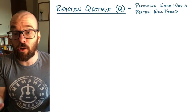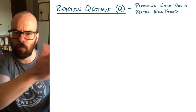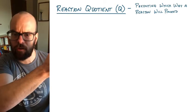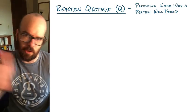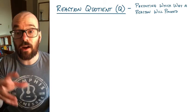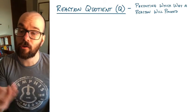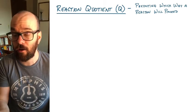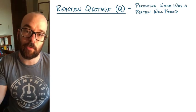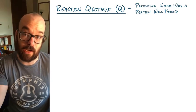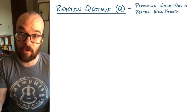Sometimes we don't know where we are — are we too far on the product side or the reactant side? Calculating the Q value and comparing it to our equilibrium constant K will tell us whether the reaction will proceed towards the reactants or towards the products.